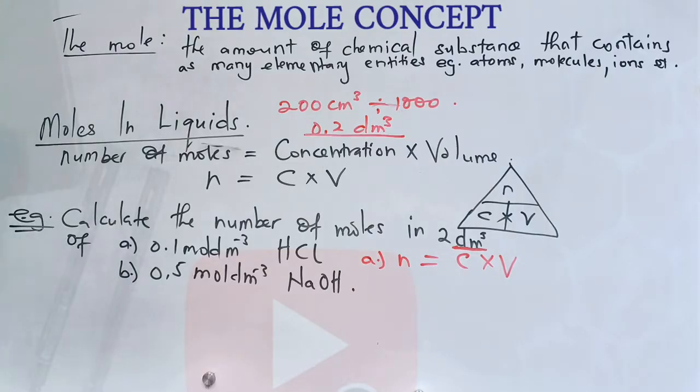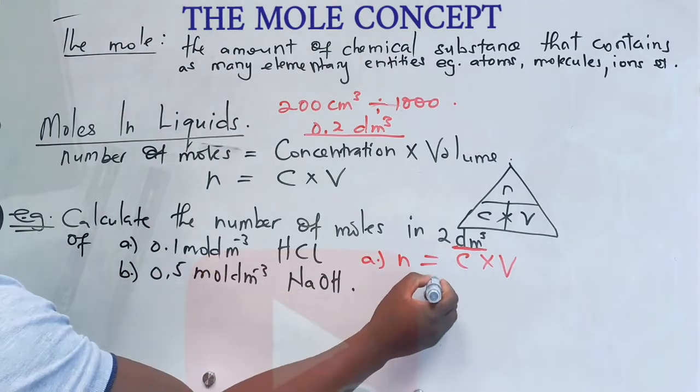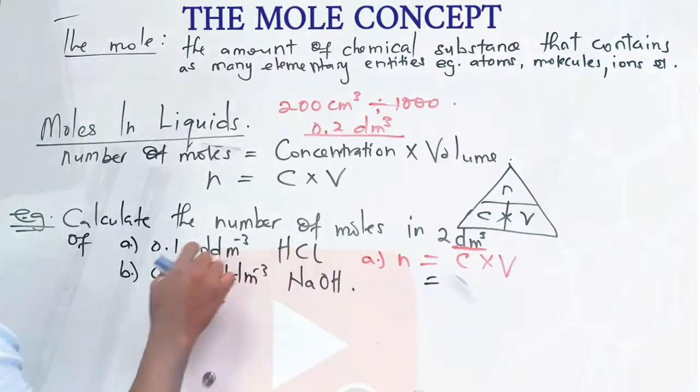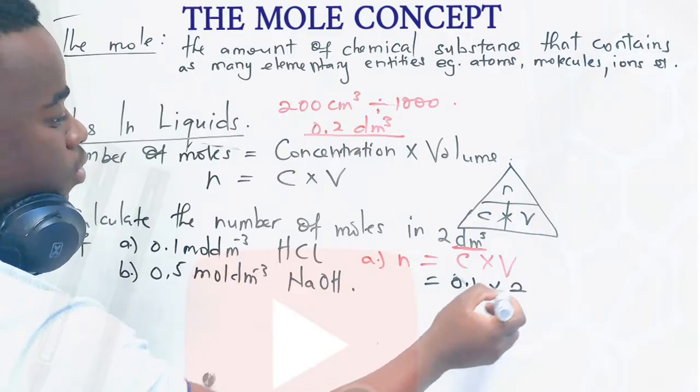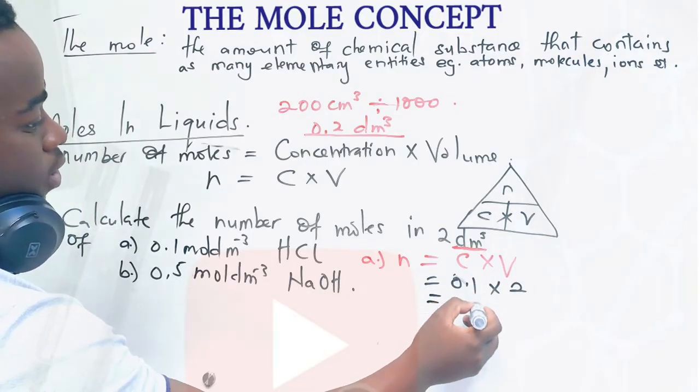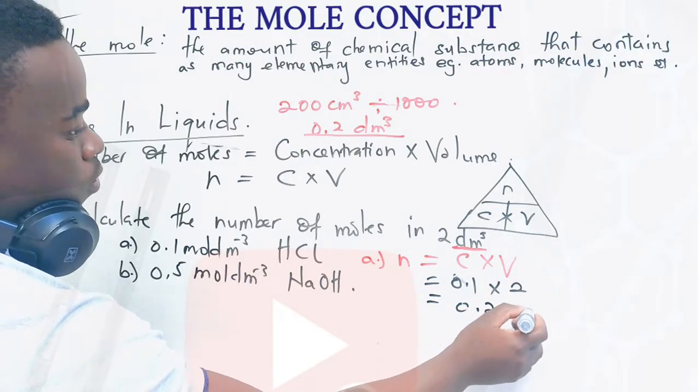But in this case, we are given volume in cubic decimeters, so it is okay. So we just calculate. So this will be 2, or our concentration is 0.1, multiplied by 2, then we get 0.2 moles.